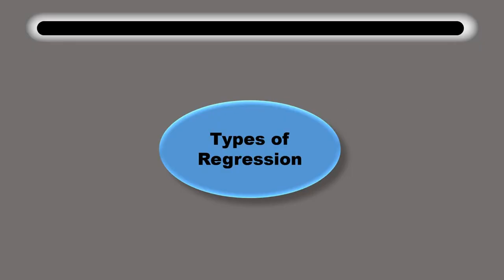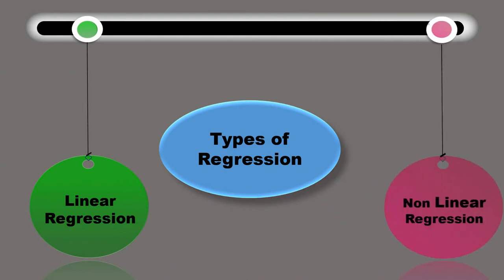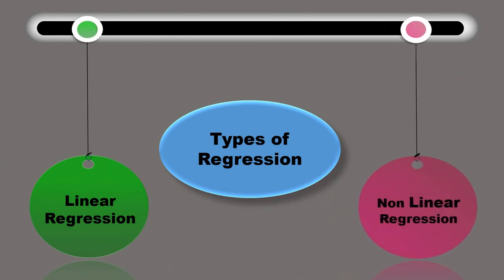There are mainly two types of regression: the first one is linear regression, and the other one is non-linear regression.